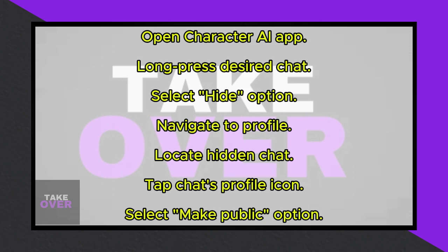Locate the chat you previously hid. To restore the chat, tap on the chat's profile icon. From the menu that appears, select the option to make the chat public again. Confirm your action by sending a message to the chat. This action will restore the chat to its original visibility.